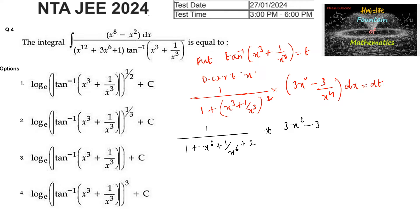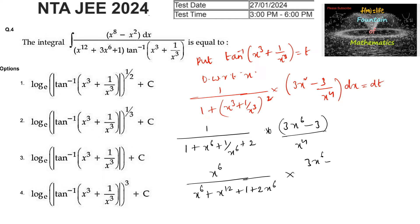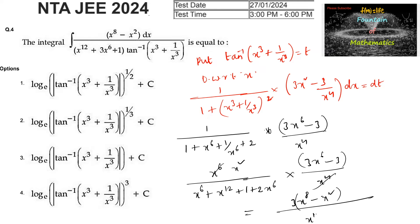3x power 6 minus 3 divided by x power 4. Multiplying through: x power 12 plus 1 plus 2 times x power 6, times 3x power 6 minus 3 divided by x power 4. So we get 3 times (x power 8 minus x square) divided by (x power 12 plus 3x power 6 plus 1) dx is equal to dt.